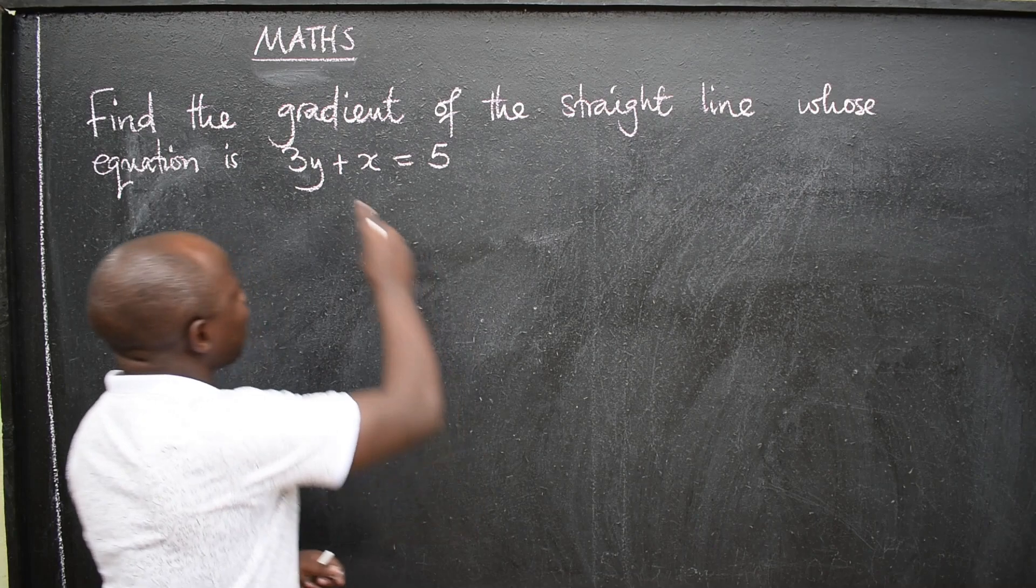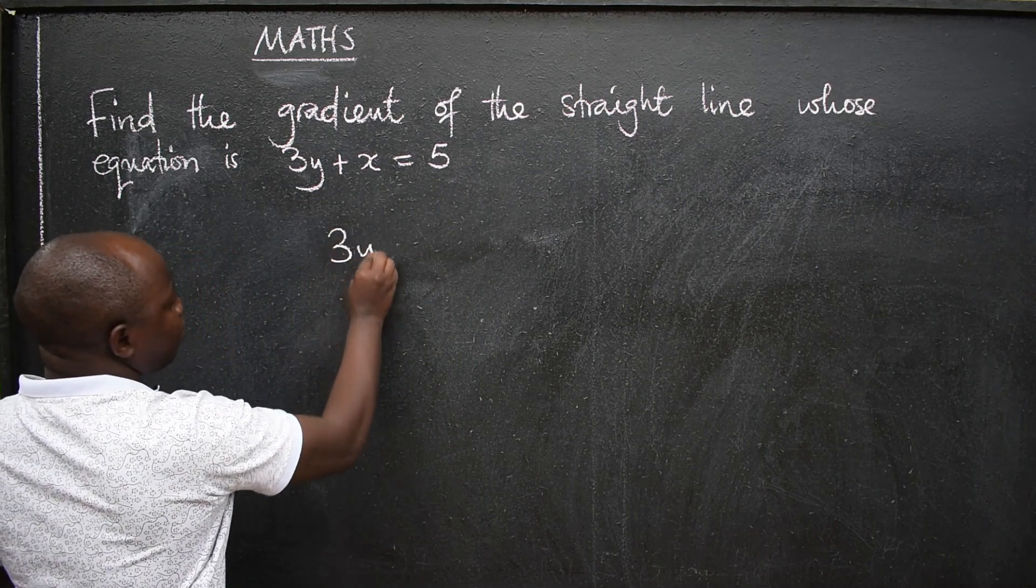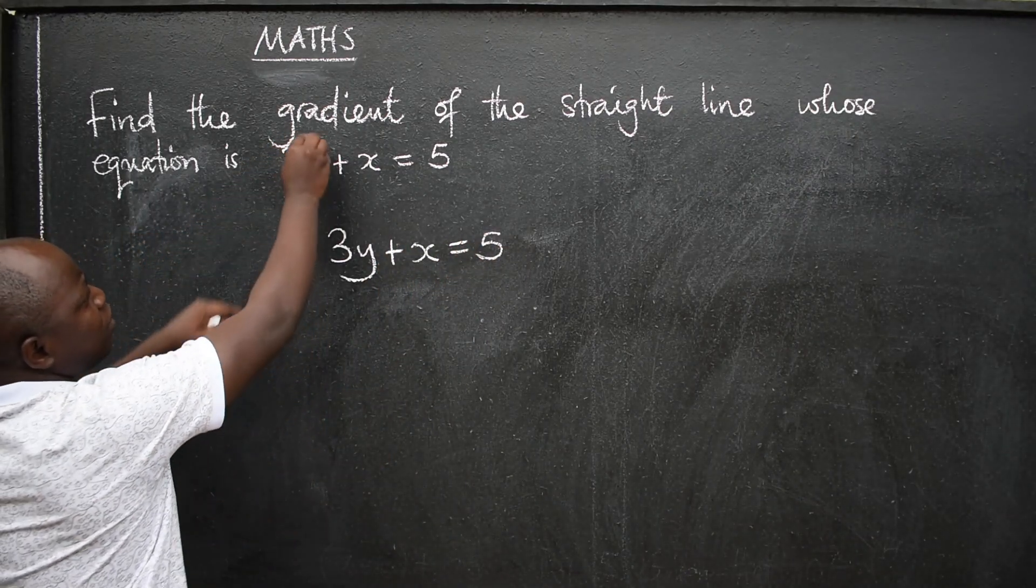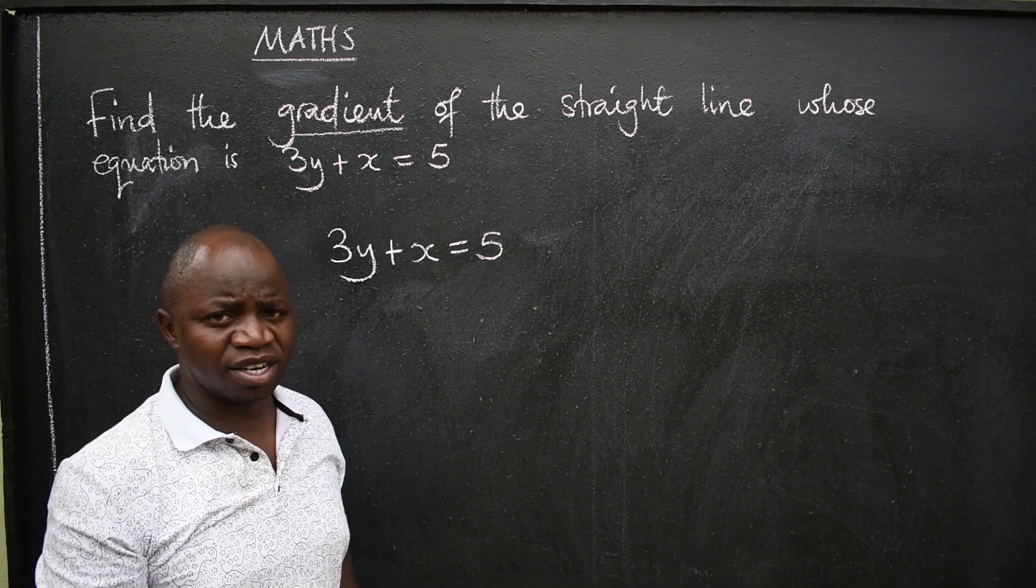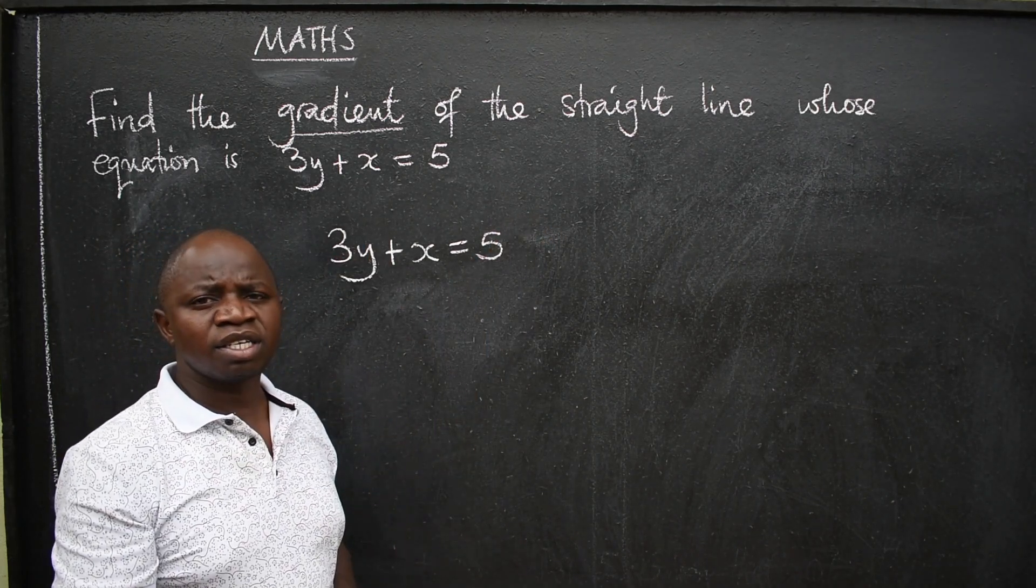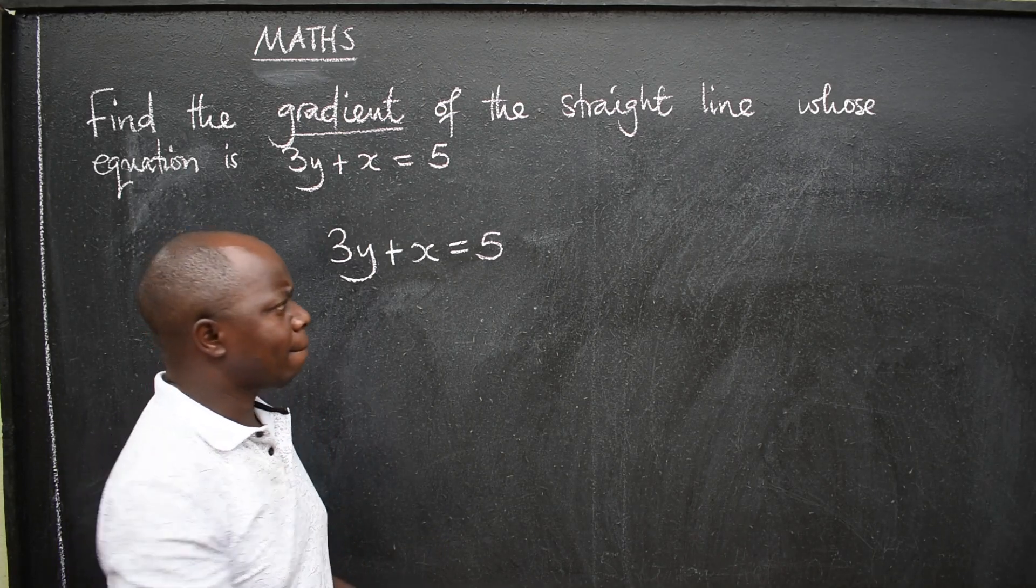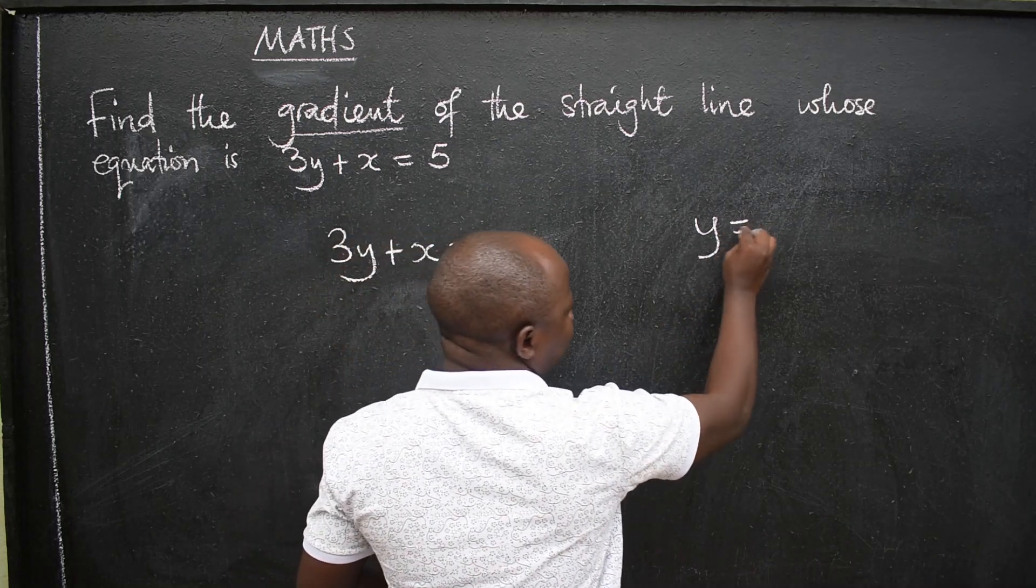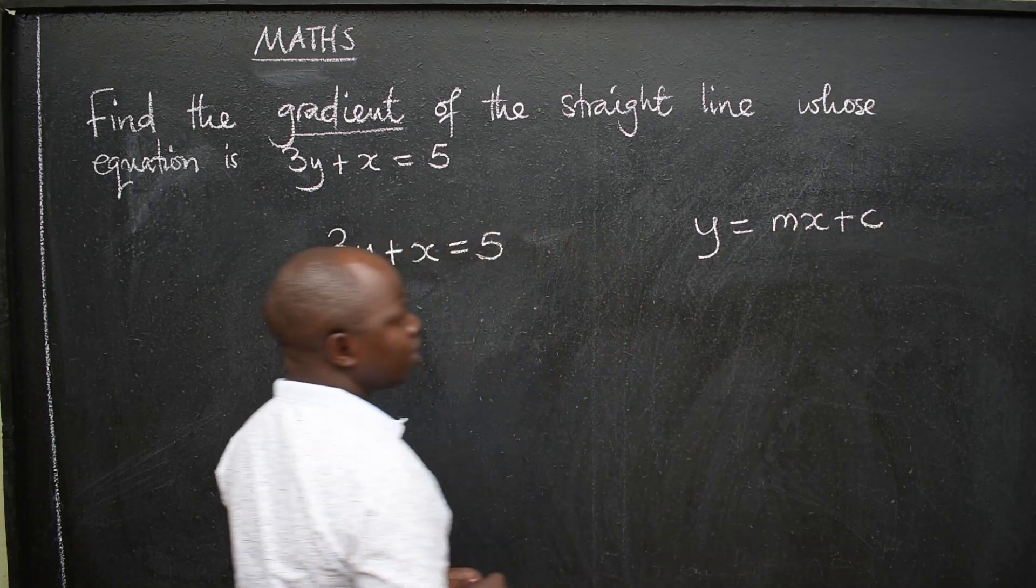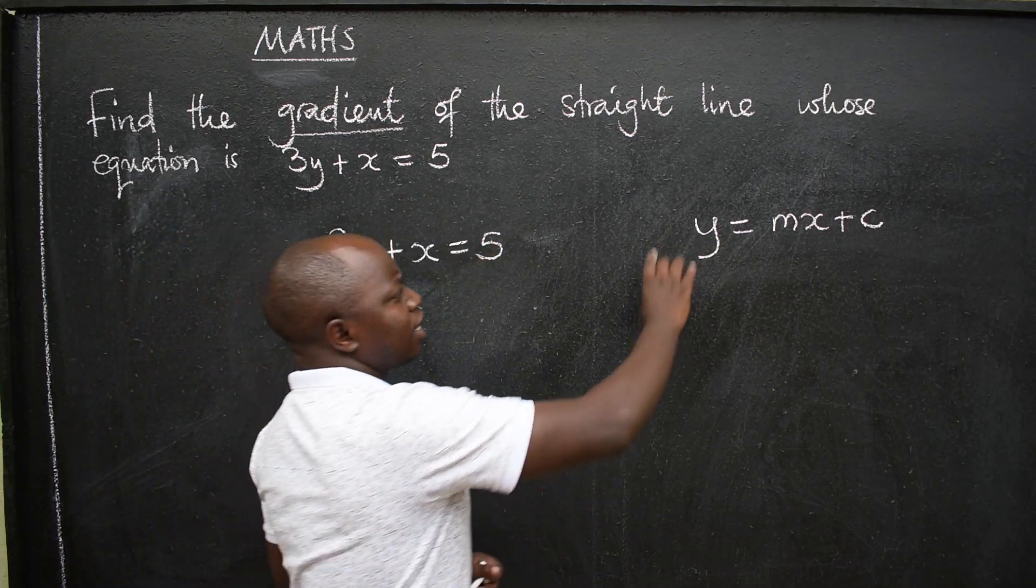Now when you are provided with an equation, a linear equation 3y + x = 5, and they've asked you to find the gradient, just know that you have to express the given equation in what we call the gradient intercept form, which is y = mx + c. You have to express the given equation in this form.